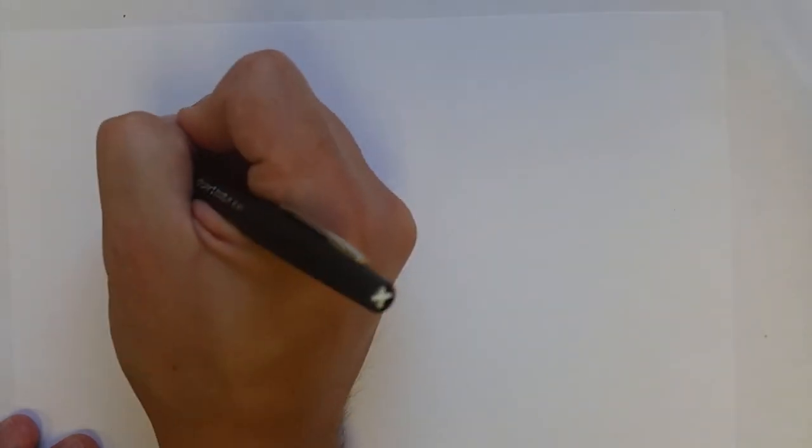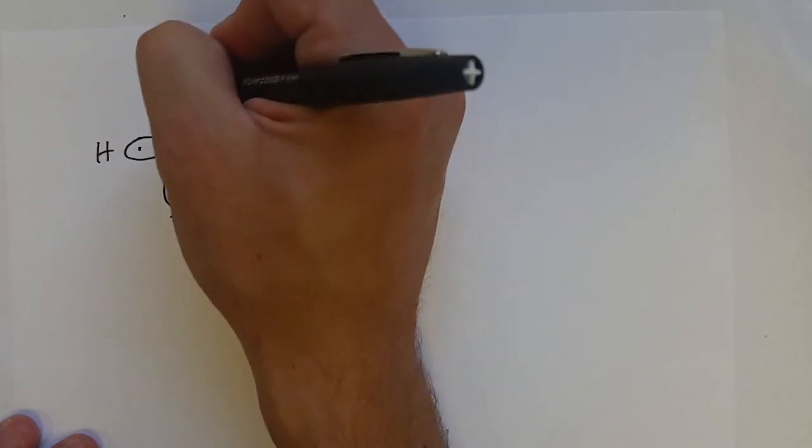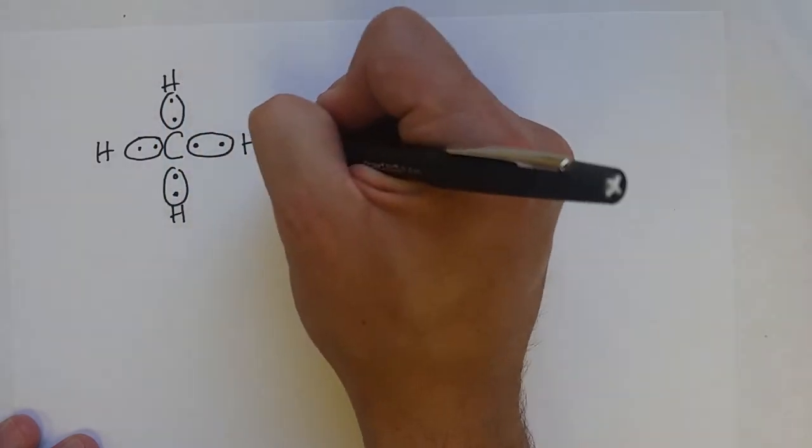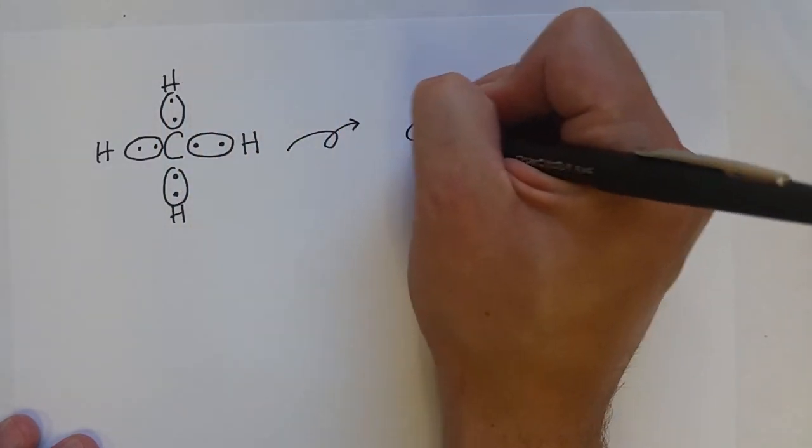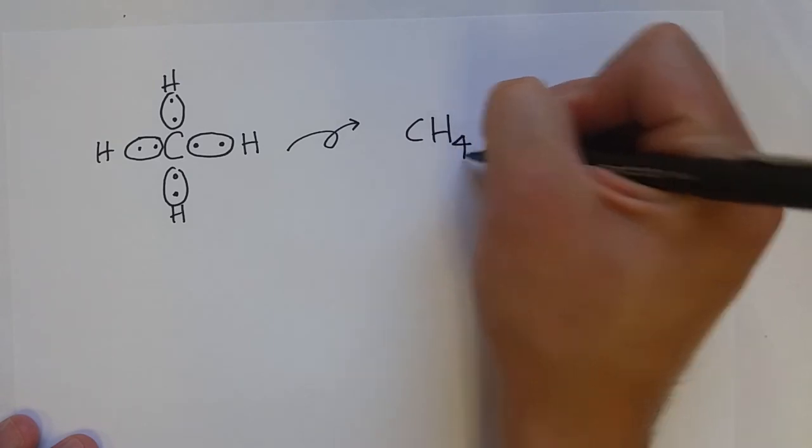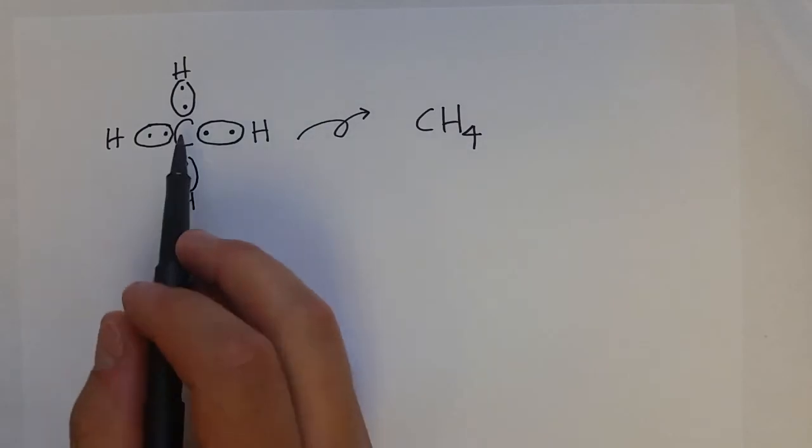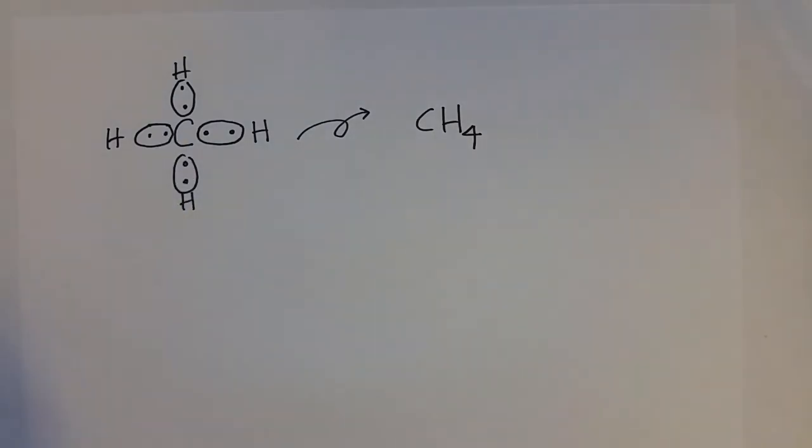So all carbon atoms have four bonds when they form a stable molecule. And so CH4 is methane, the simplest organic compound, and it has four hydrogen atoms so that each carbon atom gets the octet rule.